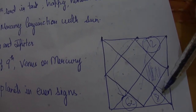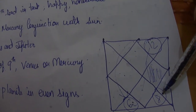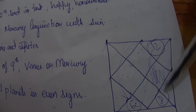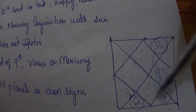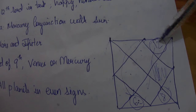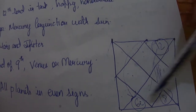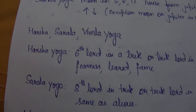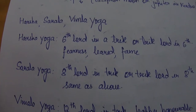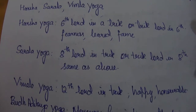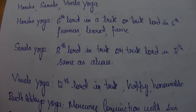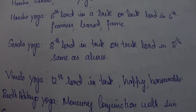Saral Yoga applies to the 8th house. If the 8th house lord is present in the trik houses — 6th, 8th, or 12th — or if another trik house lord such as the 12th or 6th lord is present in the 8th house, this gives rise to Saral Yoga, which also makes the person fearless, learned, and famous. Vimla Yoga follows the same rules but applies to the 12th lord.